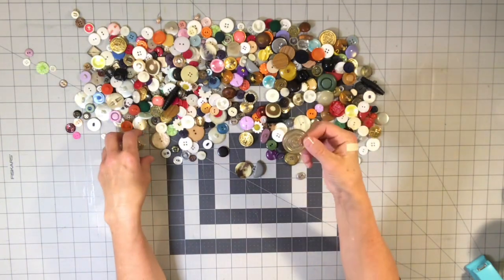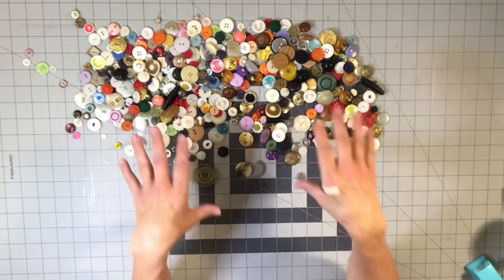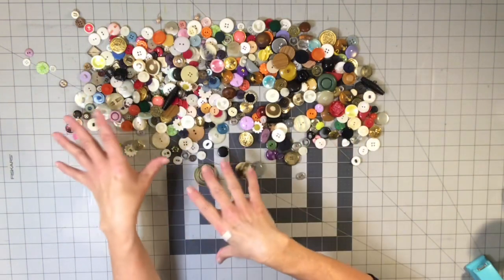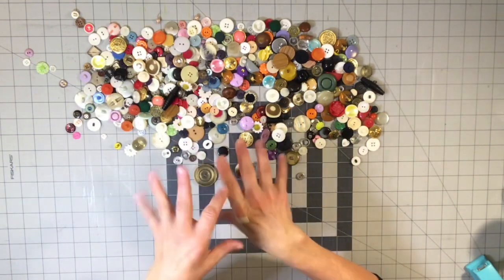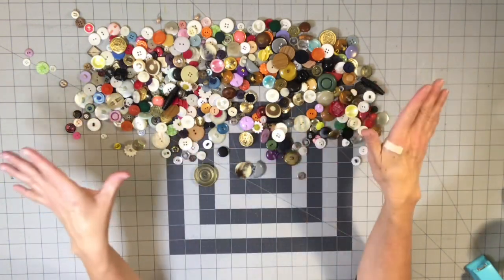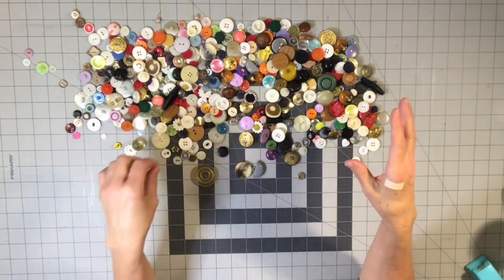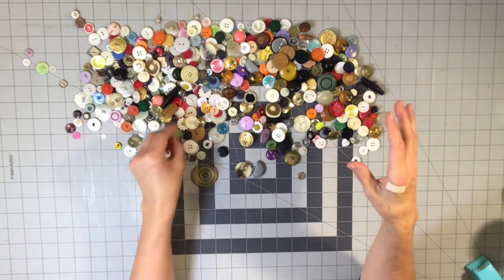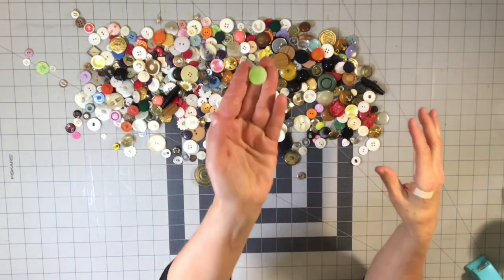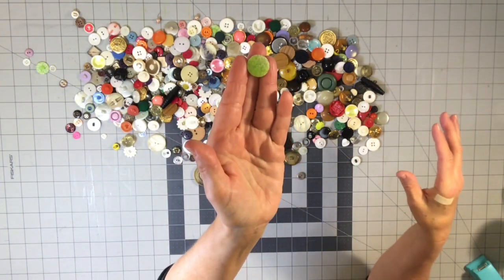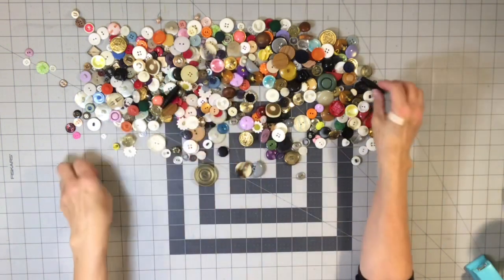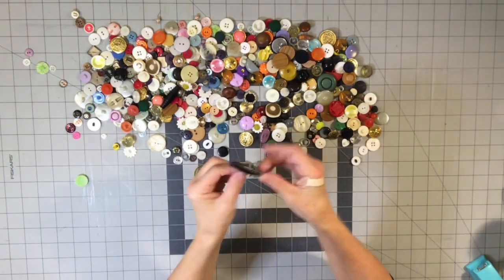There's just so many different types. This one is actually like a ball, a shank button. Any of these types of buttons—two-hole, four-hole, shanks—can come in many different sizes, many different shapes, many different materials.